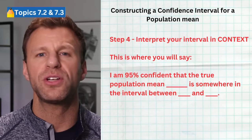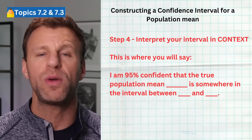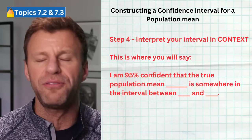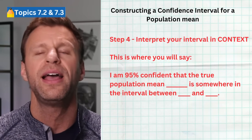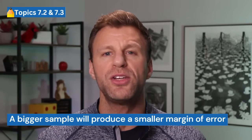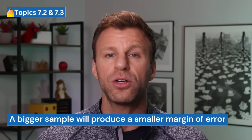Step four is interpreting your interval in context. Start by stating your level of confidence: for example, 'I am 95% confident that the true population mean of [context] is somewhere between [lower] and [upper].' Now, sample size matters — bigger samples vary less, so a bigger sample gives a smaller margin of error and a more narrow confidence interval. Always use bigger samples; they produce more accurate, smaller confidence intervals.